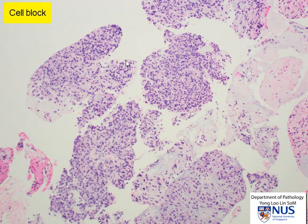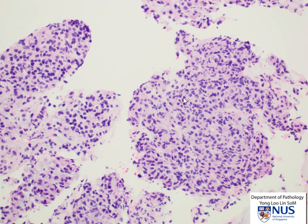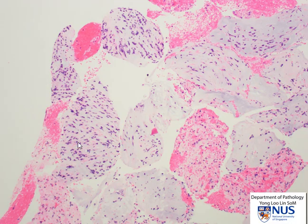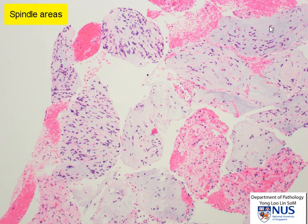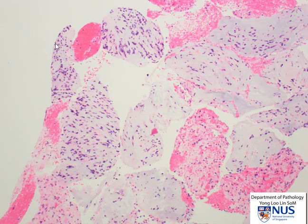This is the cell block, and we can see some quite cellular areas. On higher magnification in these cellular areas, we see that the nuclei are quite round — in other words, the cells are quite epithelioid in shape. But at the same time, there are also other areas which are less cellular with a somewhat myxoid stroma, where the nuclei are more spindled. These are the spindled areas with a more myxoid stroma, and they are less cellular. These correspond to the areas that we saw with a metachromatic stroma and spindled nuclei.